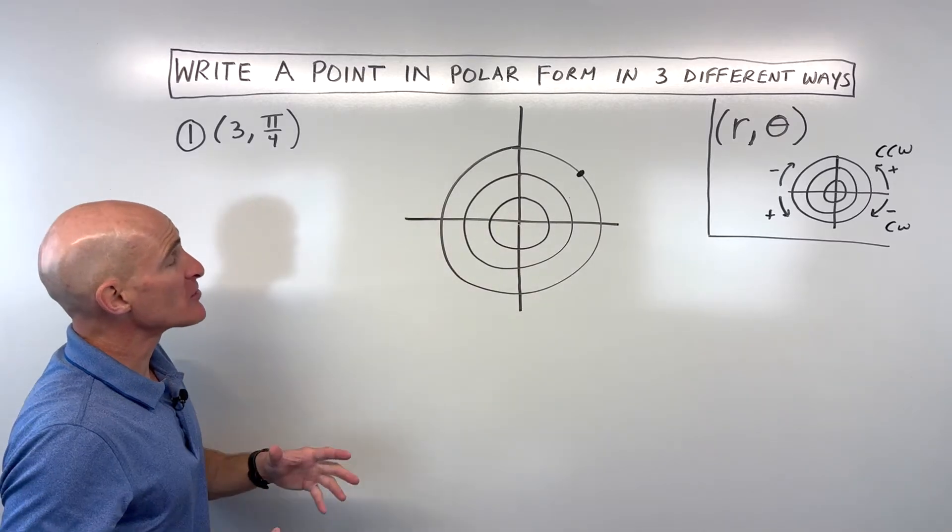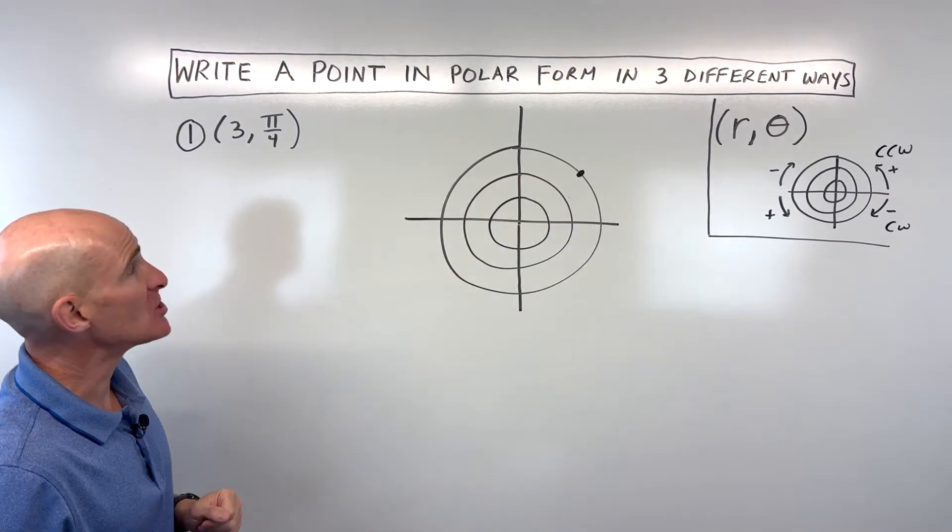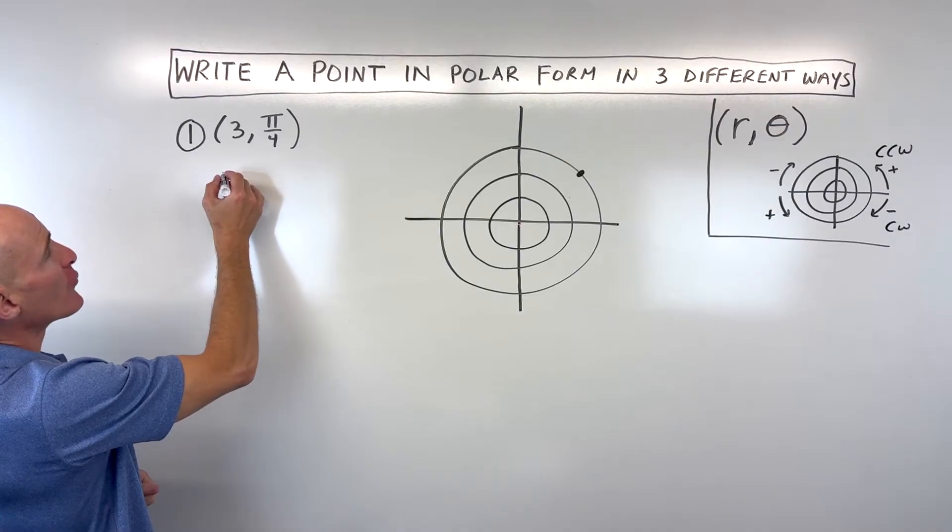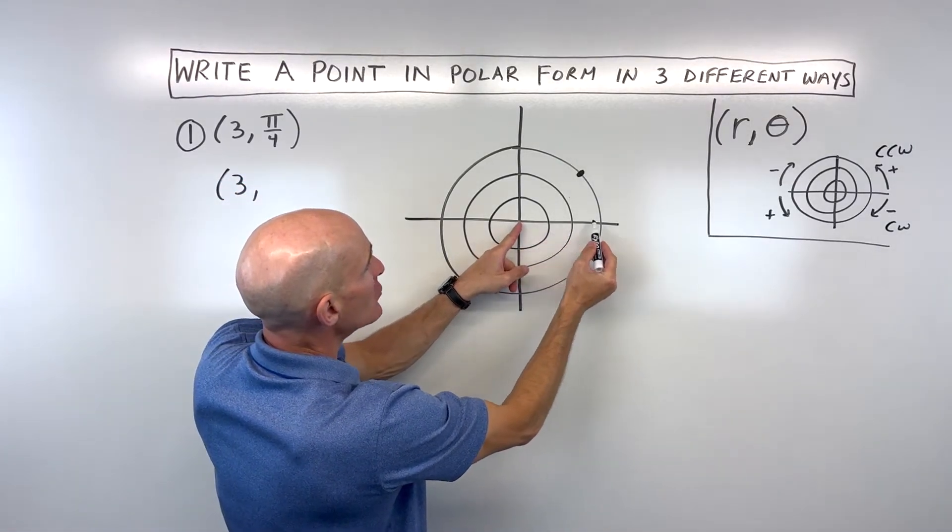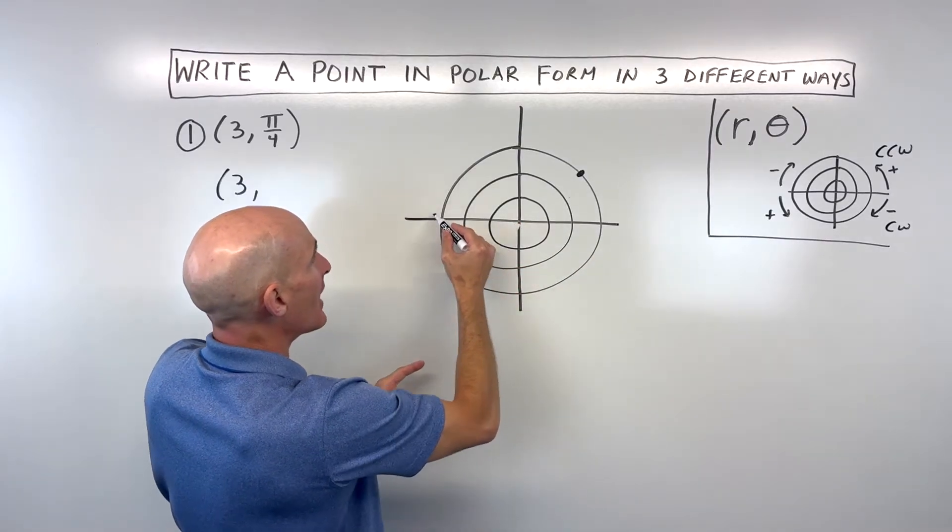Let's look at some other representations of this location. Instead of three pi over four, we could do three comma. I'm going to go here, one, two, three, and rotate this direction now.